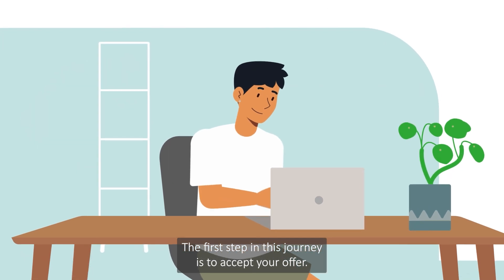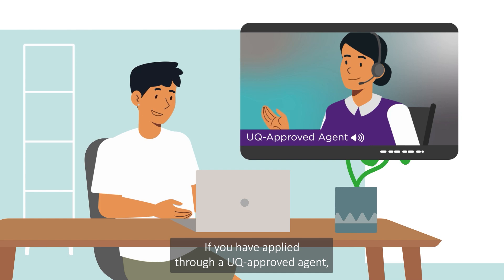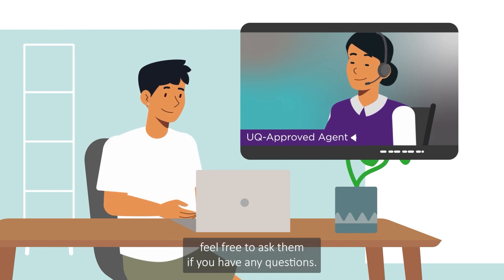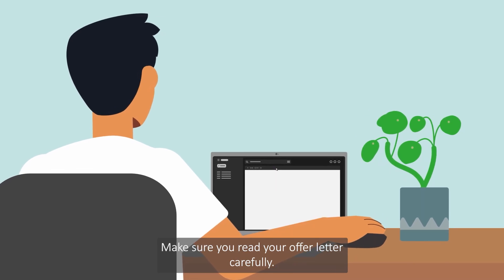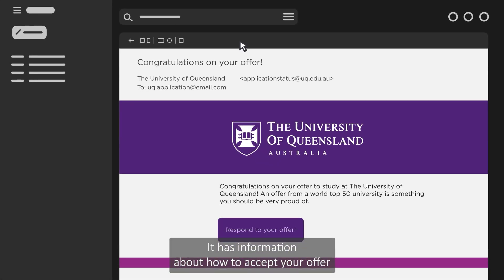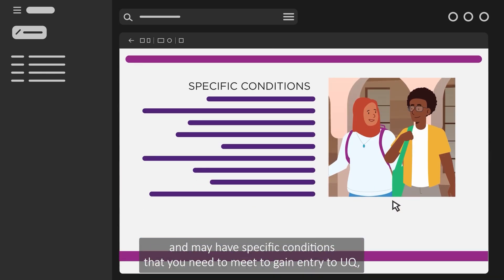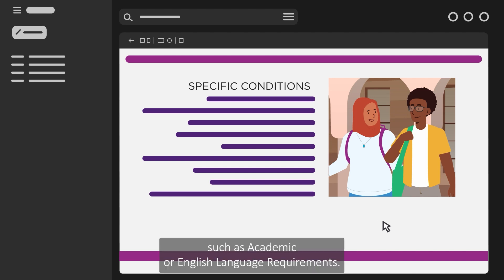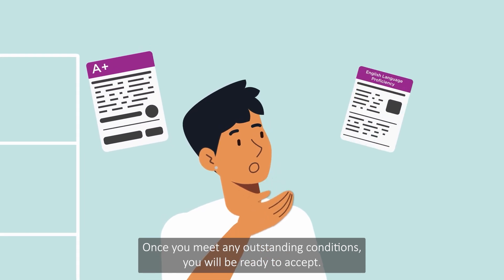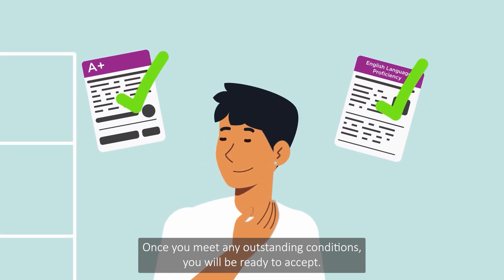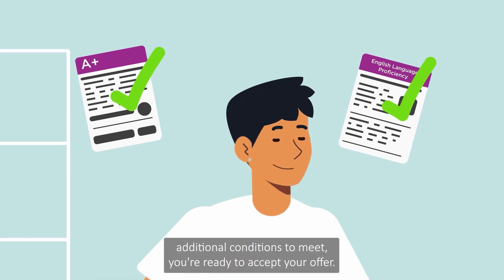The first step in this journey is to accept your offer. If you have applied through a UQ approved agent, feel free to ask them if you have any questions. Make sure you read your offer letter carefully. It has information about how to accept your offer and may have specific conditions that you need to meet to gain entry to UQ, such as academic or English language requirements. Once you meet any outstanding conditions, you will be ready to accept. If you don't have any additional conditions to meet, you're ready to accept your offer.